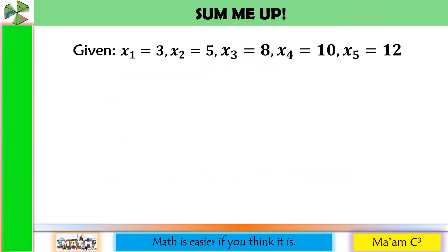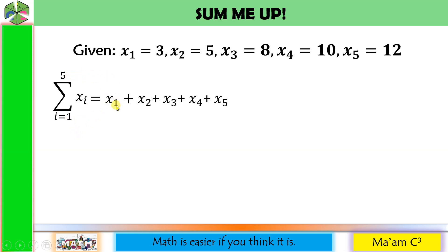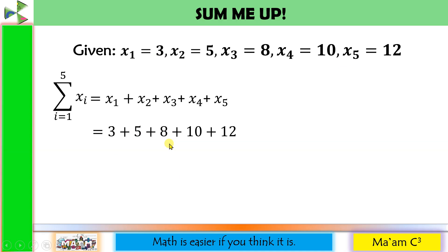Let's have an activity: Sum Me Up. Given X sub 1 equals 3, X sub 2 equals 5, X sub 3 equals 8, X sub 4 equals 10, and X sub 5 equals 12. Let us evaluate the summation of X sub I, I going from 1 to 5. Substituting values: 3 plus 5 is 8, 8 plus 8 is 16, 16 plus 10 is 26, and 26 plus 12 is 38.